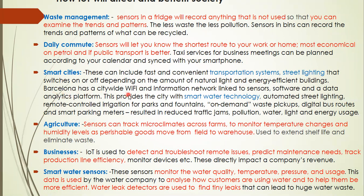Barcelona has a city-wide Wi-Fi and information network linked to sensors, software, and a data analytics platform. This provides the city with smart water technology, automated street lighting, and remote-controlled irrigation of parks and fountains. On-demand waste pickups, digital bus routes, and smart parking meters resulted in reduced traffic jams, pollution, and water, light, and energy usage — all through the Internet of Things, with everything connected and sensors monitoring the use.